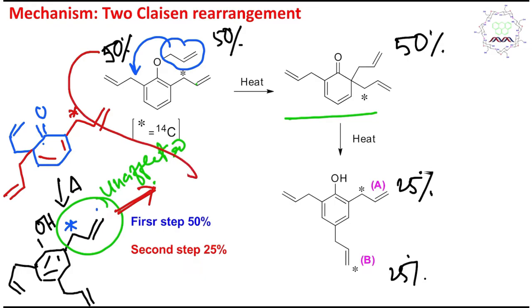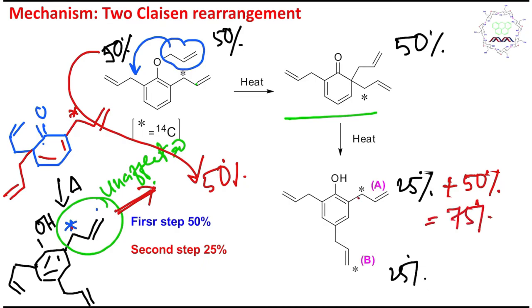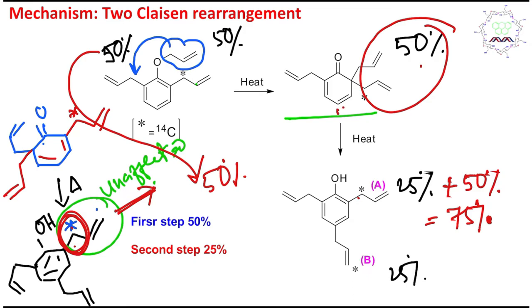The other 50% directly gives the label at this ortho position. So the label at this ortho position is 50% plus 25% = 75%. The label was already here at 50% from the first step, and when the second step happened, from one side 50% and from the other side half was migrated here — that's 25%. So already 25% from this step, plus 50% from the other side, giving 75% total here and 25% there.